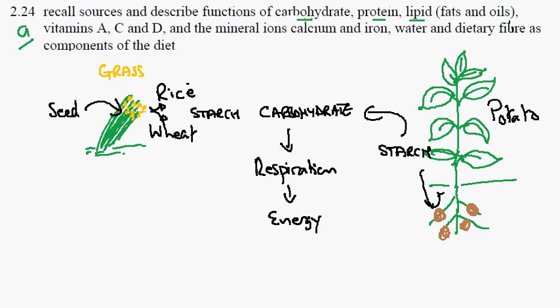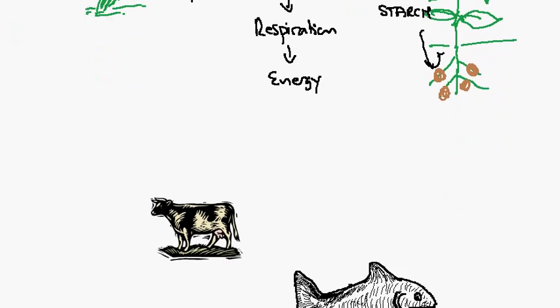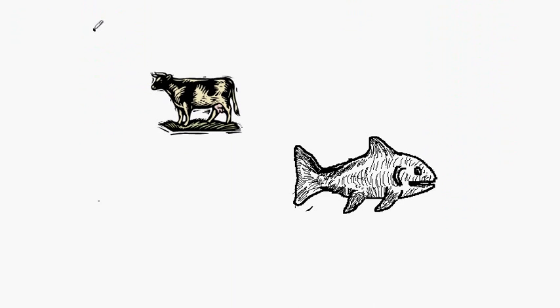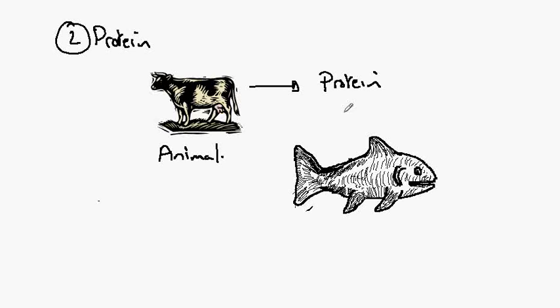Our second food group is protein. Animal protein is a well-known source, and let's not forget the fish. Also animals, but an important source of protein in many parts of the world. And once more, plants can provide us with protein in the form of beans and seeds.